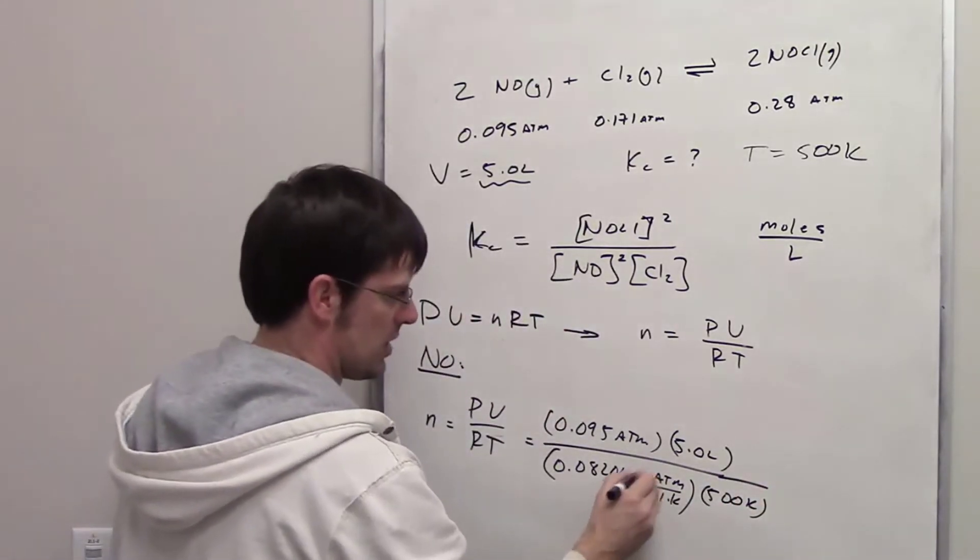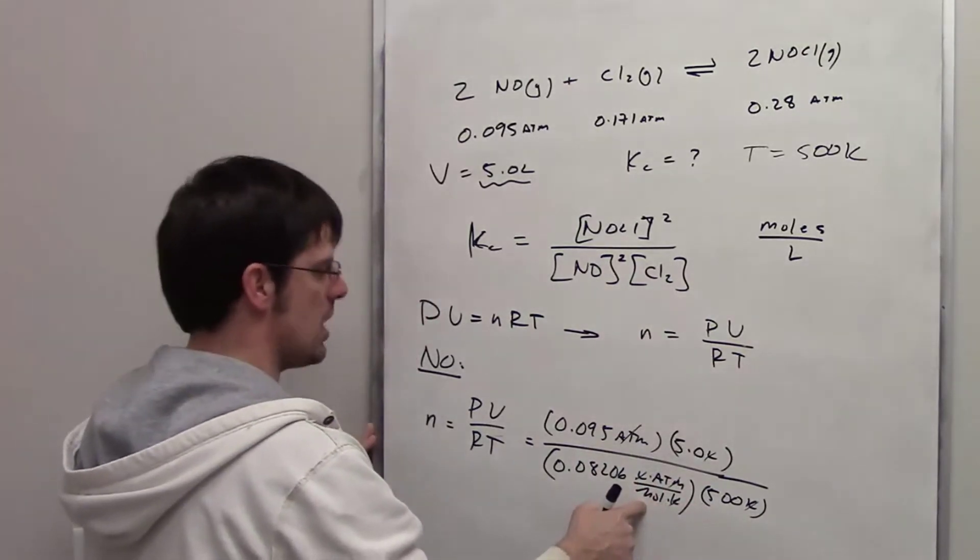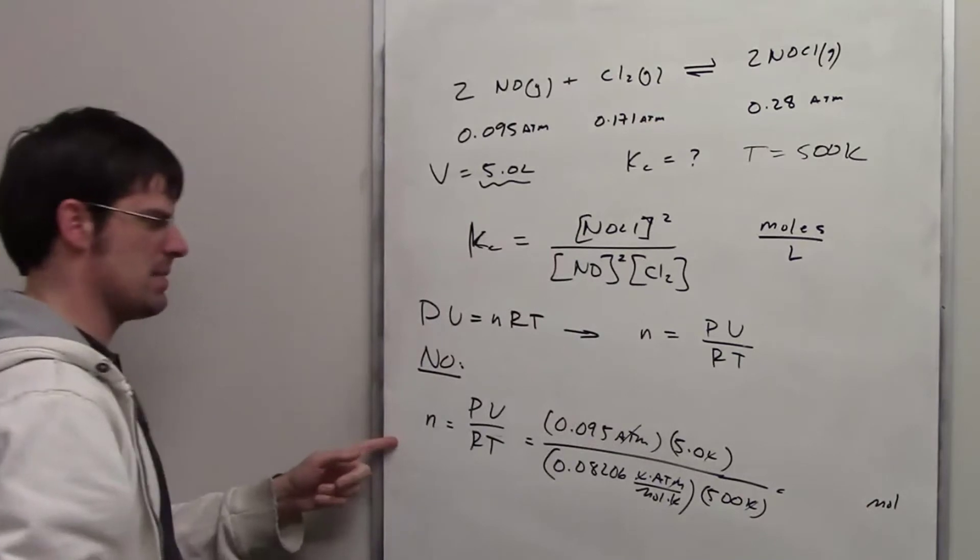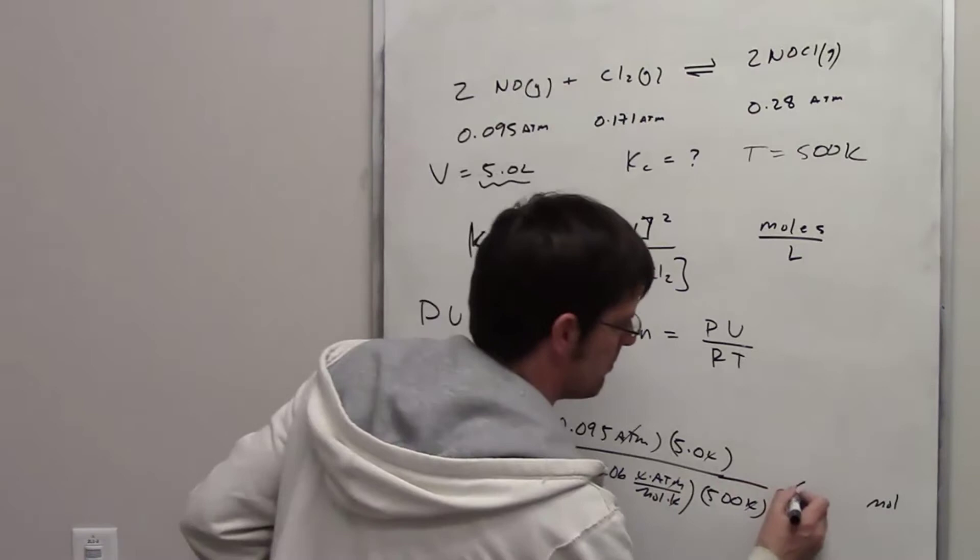The liters cancel each other out. The atmospheres cancel each other out. The kelvins cancel each other out. I'm left with moles in the denominator of the denominator, which is in the numerator. How many moles does that come out to be? Well, for NO, that comes out to be 0.0115 moles.